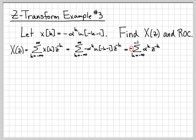I'm going to factor out the negative sign out front, and then I'm left with just α^k z^(-k) inside. Let's continue manipulating this into a form that we can solve easily. This is the same thing as α times the inverse quantity raised to the k, which is the same thing as -∑(k=-∞ to -1) (α/z)^k.